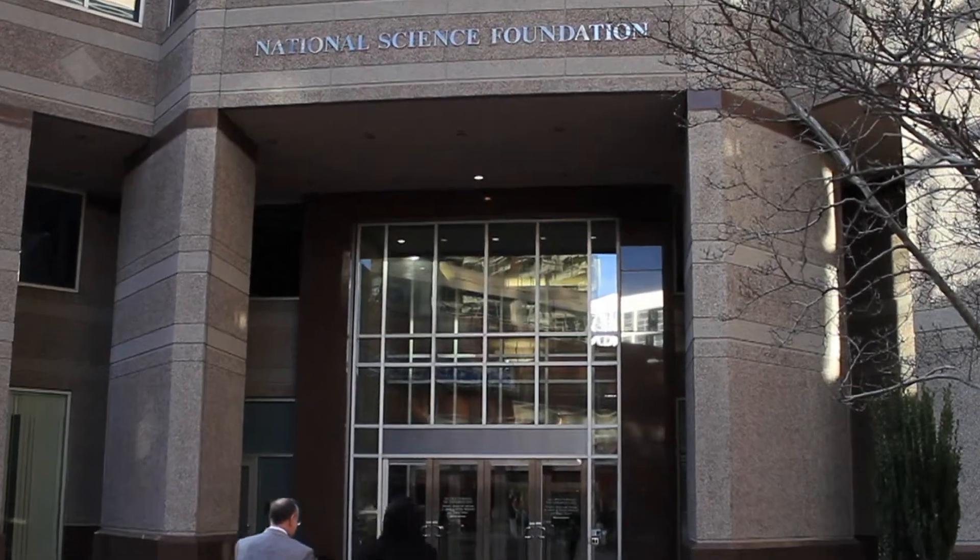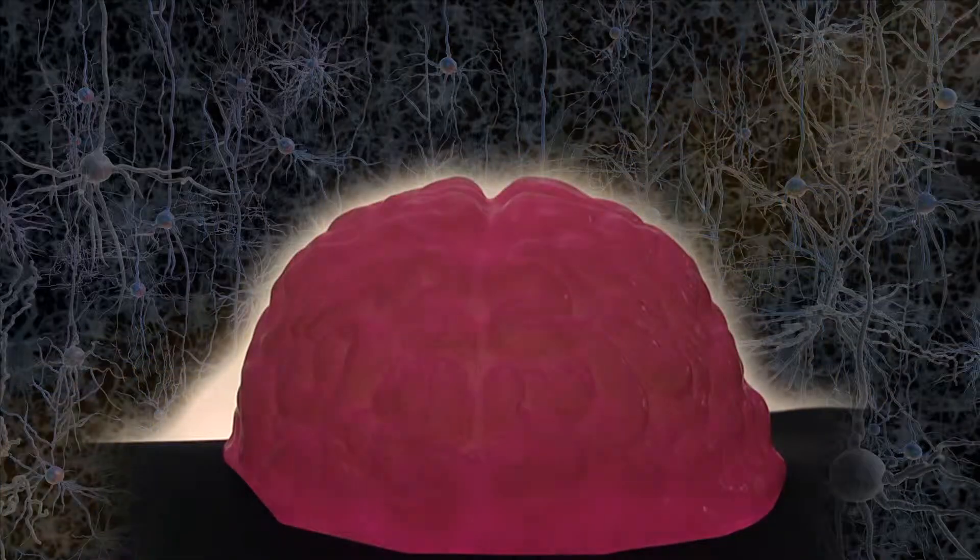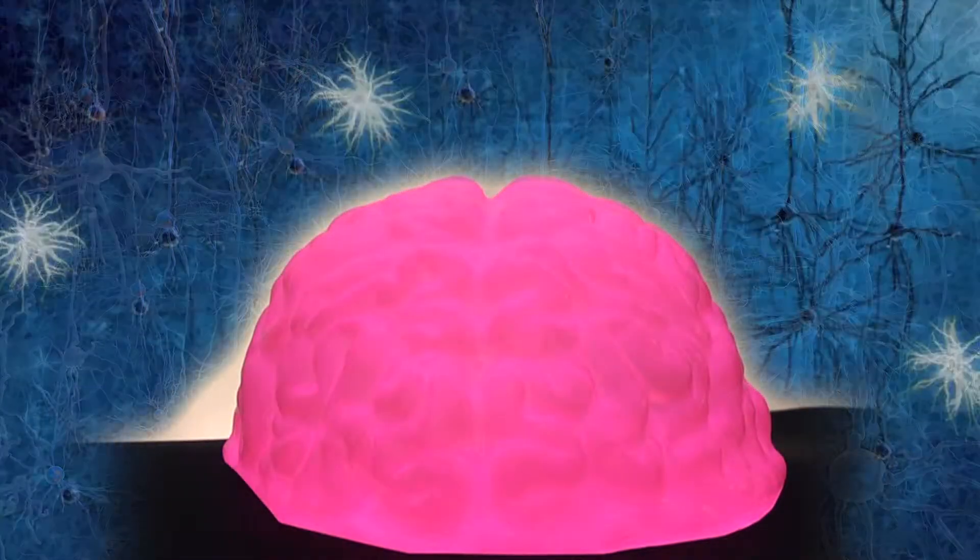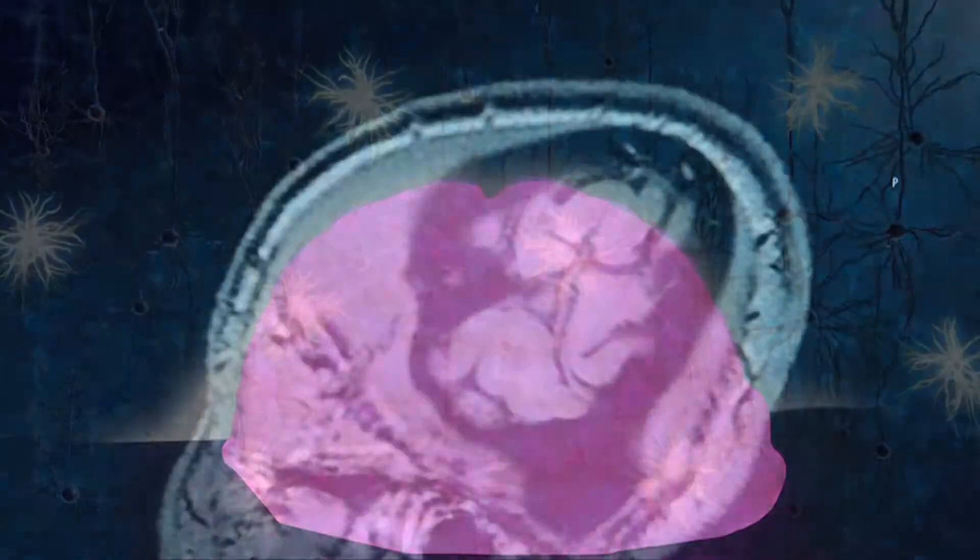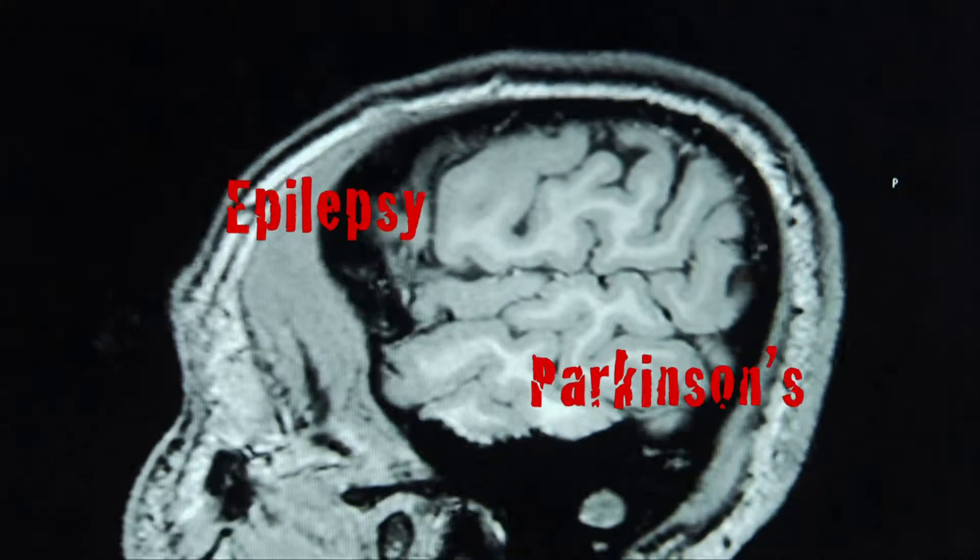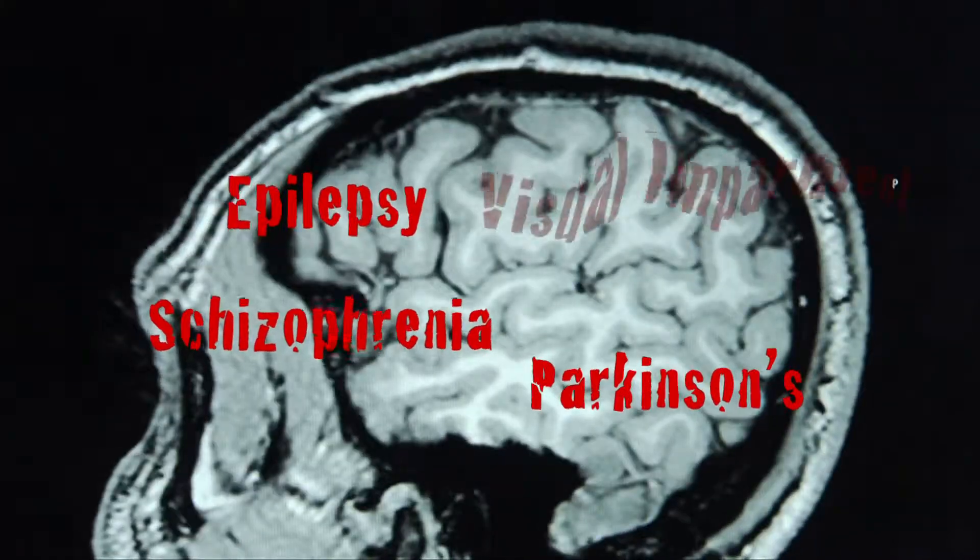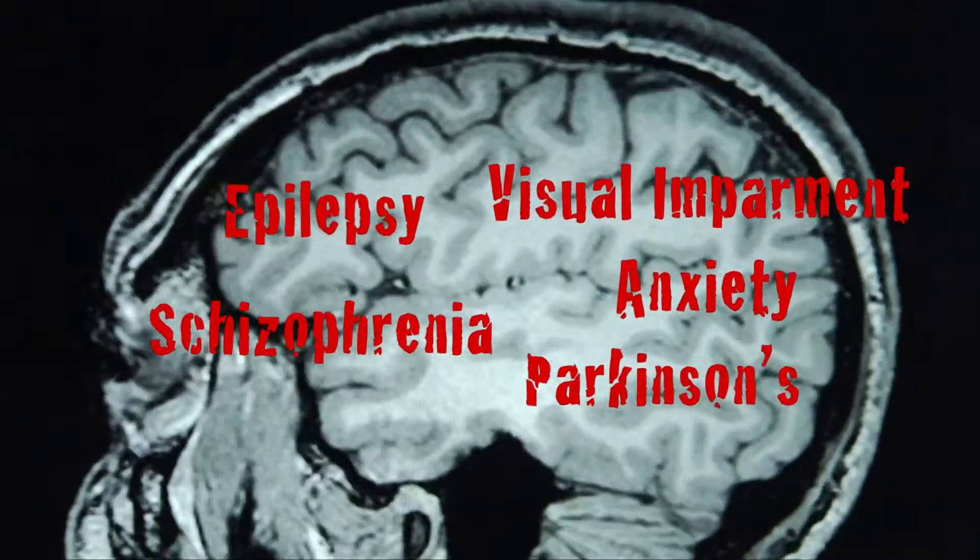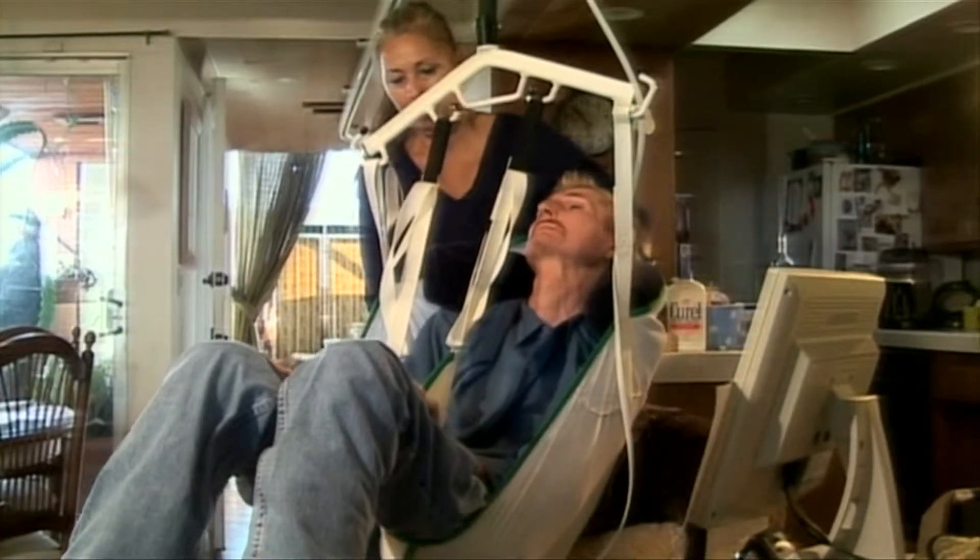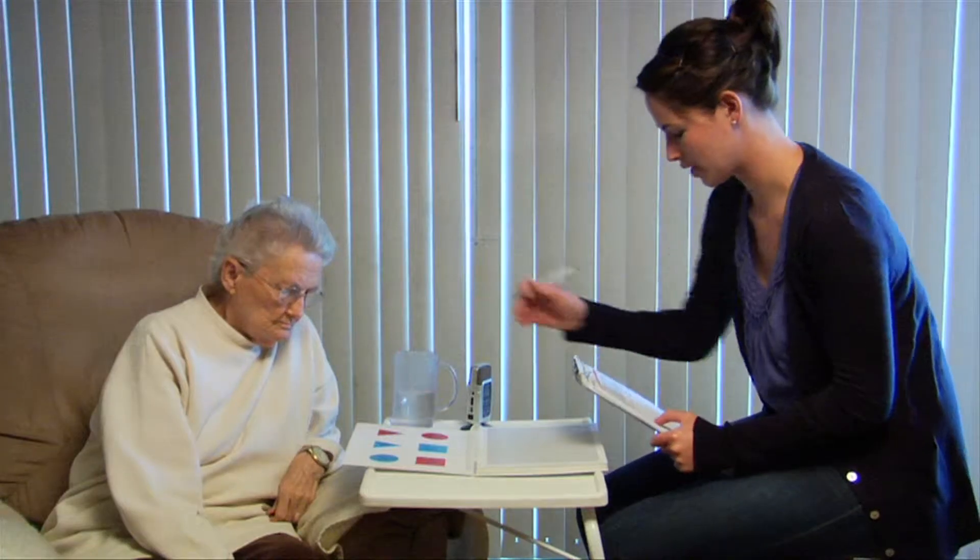Developed with funding from the National Science Foundation, optogenetics is being used around the world to study neurons possibly involved in epilepsy, Parkinson's, schizophrenia, visual impairment, anxiety, and many other diseases and disorders. Hopes are high such studies will ultimately lead to new treatments.